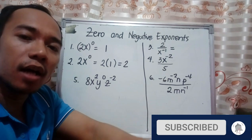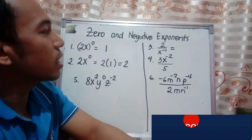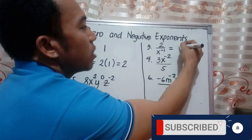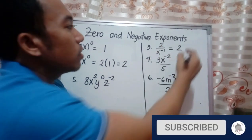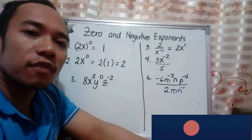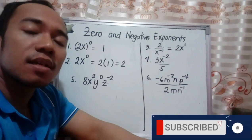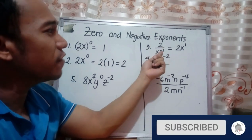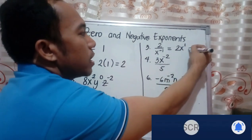Or think of it as taking the reciprocal. For example, you have 2 over x raised to negative 1. Since the 2 doesn't have a negative exponent, it stays at the numerator. The x raised to negative 1 is moved to the numerator, becoming x raised to positive 1. Once you change the location of the expression from denominator to numerator, it changes the sign of the power. So negative 1 becomes positive 1, giving us 2x raised to 1, or simply 2x.